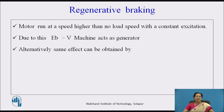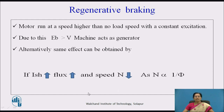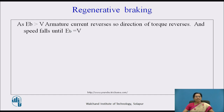In regenerative braking, the motor runs at a speed higher than no-load speed with constant excitation. Due to this, the back EMF becomes greater than the supply voltage and the machine acts as a generator, delivering power back to the supply with the armature current direction also reversed. The same effect can be obtained by increasing the shunt or field current, which increases flux; since speed is inversely proportional to flux, the speed decreases. For a shunt motor, if back EMF is greater than supply voltage, the armature current reverses.